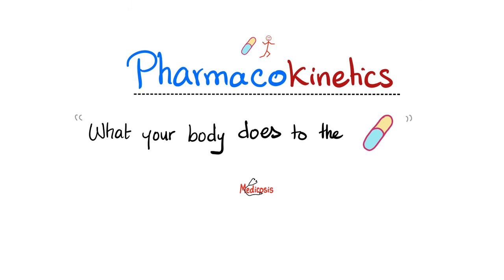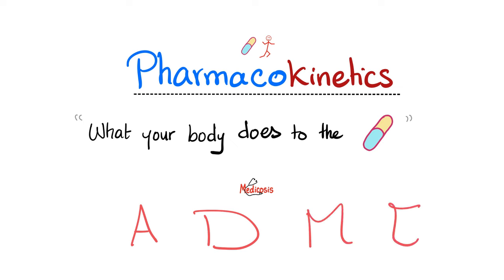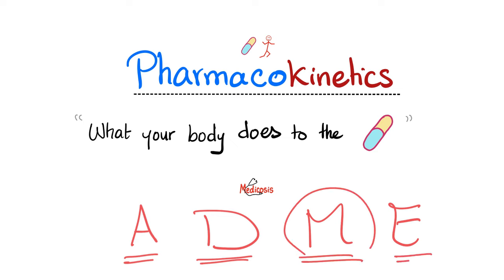What is pharmacokinetics? It is what your body does to the drug, and it is spelled out as ADME. The A is absorption, D is distribution, M is metabolism or degradation, and E is excretion or elimination.